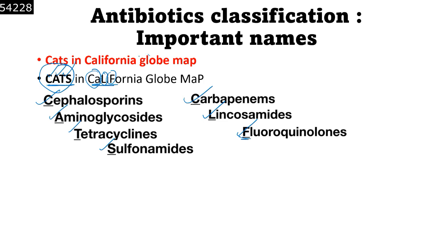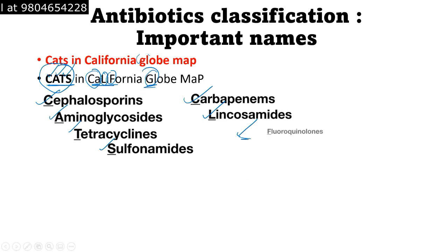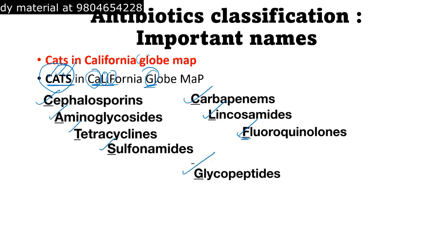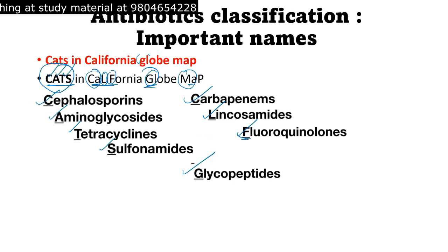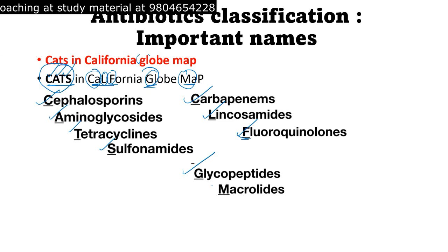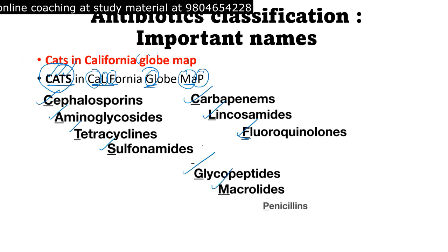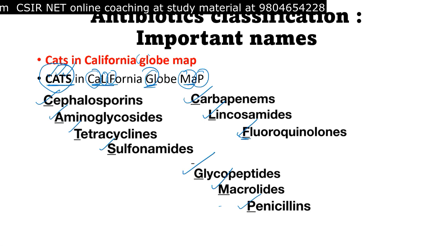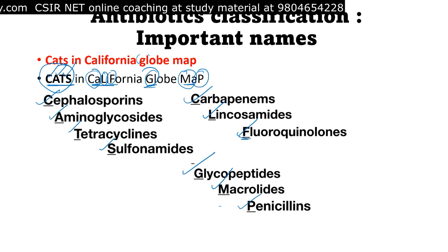Then we have GLOBE. G is for Glycopeptides. Then MAP: MA is for Macrolides, and the capital P is for Penicillins. So this is how we list Cats in California Globe Map — if you remember that, you can clearly write all of these antibiotic classes.